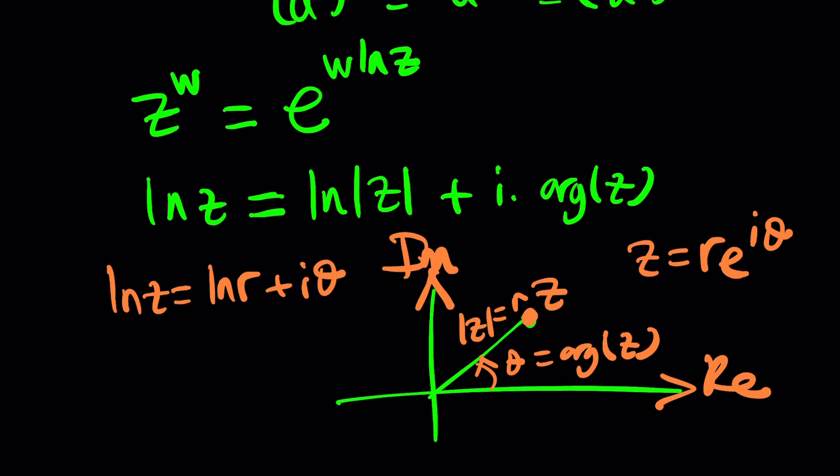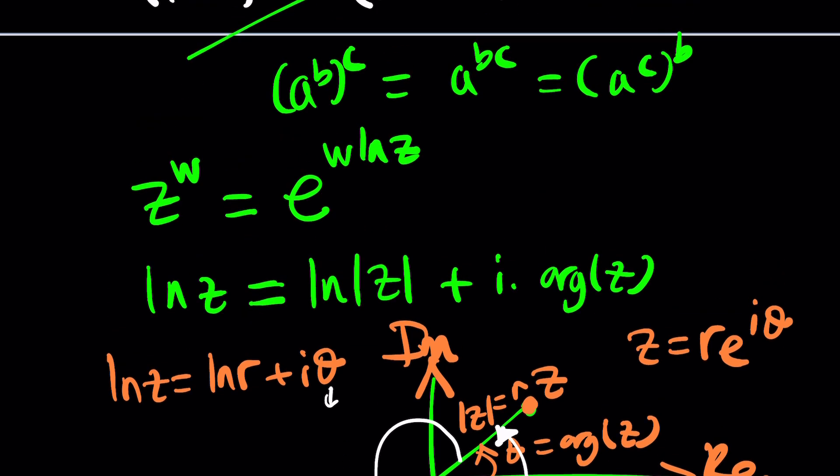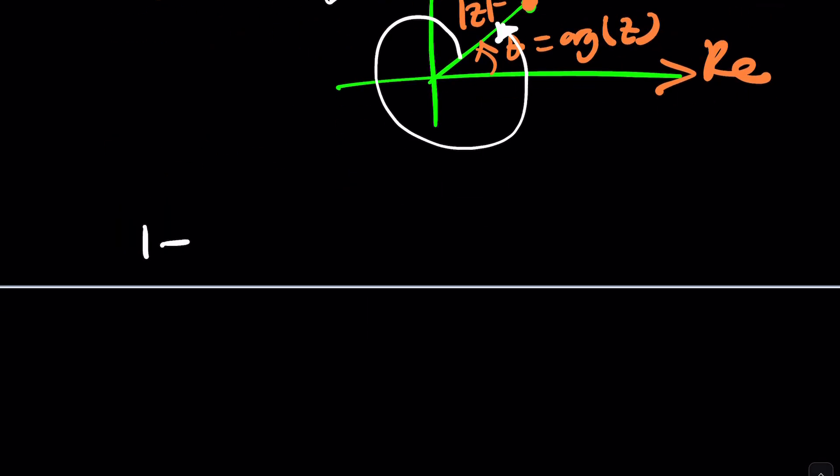So ln z can be written as ln r plus i theta. But you've got to be careful because theta is not unique. Theta, I mean, not theta, theta, theta, the Greek letter, which is hard to pronounce for me, is basically you can add multiples of 2 pi to it. So if theta is the principal value, you are allowed to add multiples of 2 pi. Or theta just represents general. When you find the solutions, you can add them. But what is the ln of z in this case? So we've got to apply it to our situation. So this is our number, this is z, and this is w. So let's use the formula. E to the power 2i times ln 1 minus i. So I'm going to focus on evaluating this first, and then I'll plug it in.